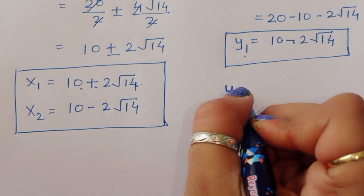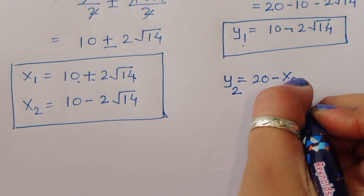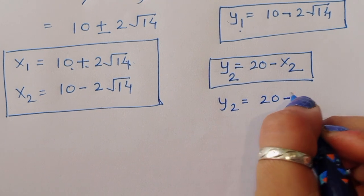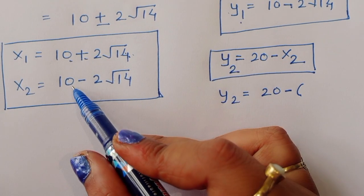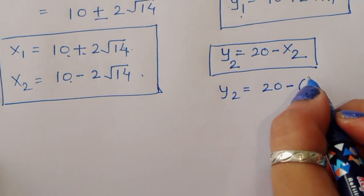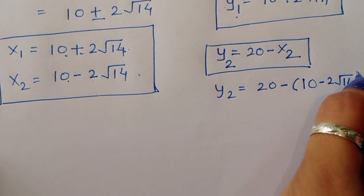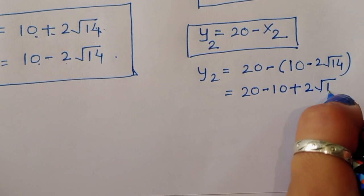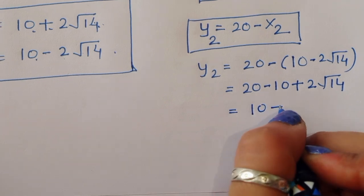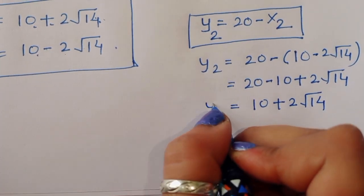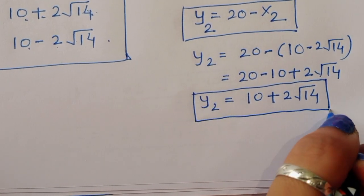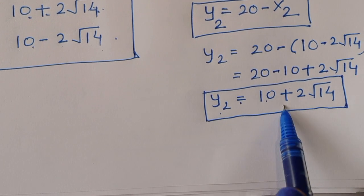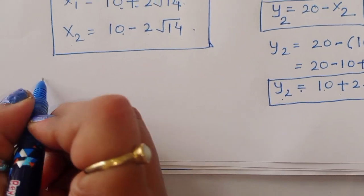Now we find y₂. Using y equals 20 minus x, y₂ equals 20 minus x₂. The value of x₂ is 10 minus 2 root 14, so y₂ equals 20 minus (10 minus 2 root 14), which equals 20 minus 10 plus 2 root 14. Therefore y₂ equals 10 plus 2 root 14.